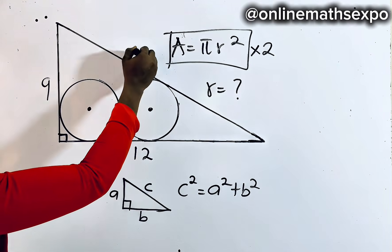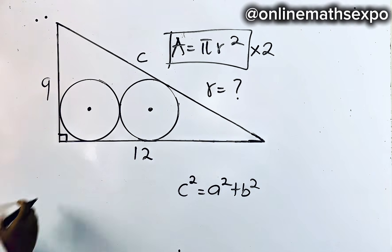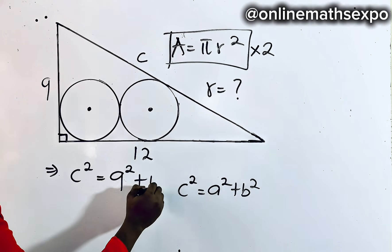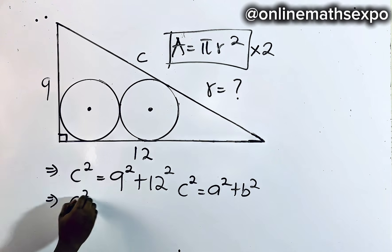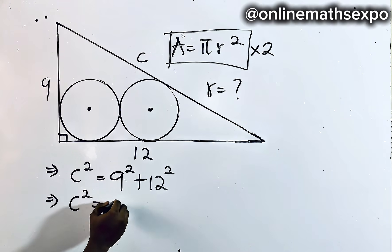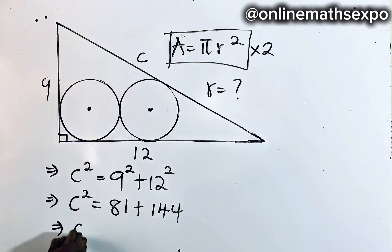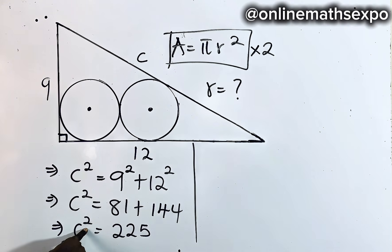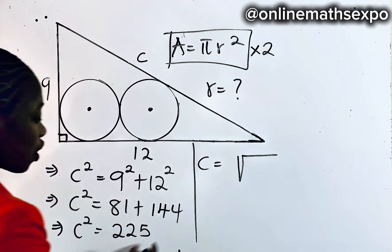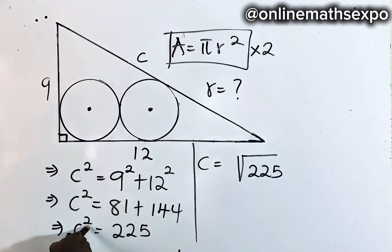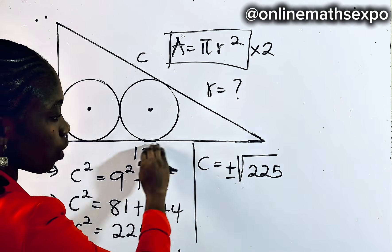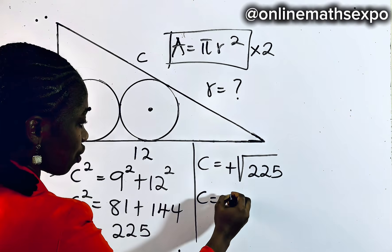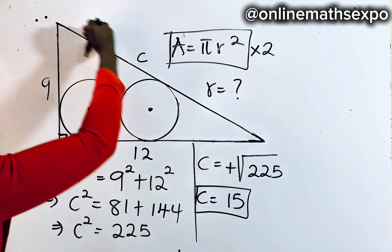Applying it here, we label the hypotenuse C. So C squared equals 9 squared plus 12 squared. Simplifying: 9 squared is 81, 12 squared is 144, giving C squared equals 225. Taking the positive square root (since we're working with lengths), C equals 15. So the missing length is 15.